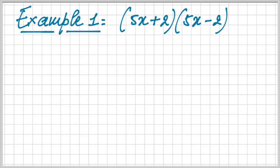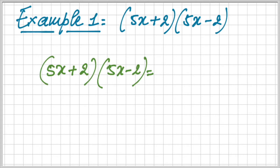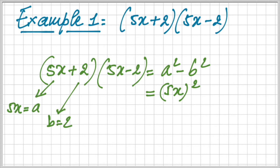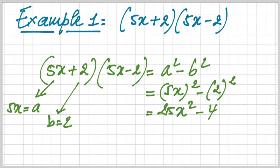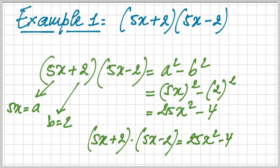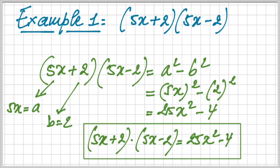Let's have a look at some examples. The first example is 5x plus 2 times 5x minus 2. So we have 5x, which is basically a from the previous formula, and 2 is equal to b. And we can say that we have a squared minus b squared. So the first term, a squared, is 5x squared. The second term is minus 2 squared, which gives us the result. 5x squared is 25x squared, and 2 squared is 4. So we find 25x squared minus 4. The product of 5x plus 2 times 5x minus 2 is 25x squared minus 4.